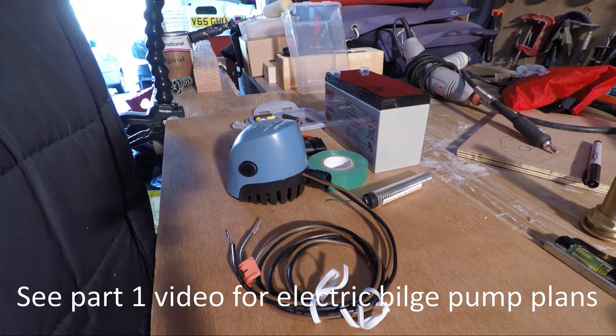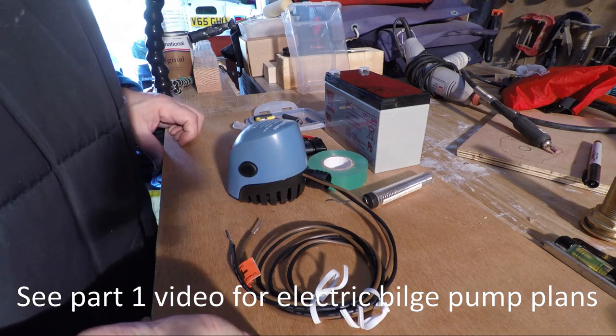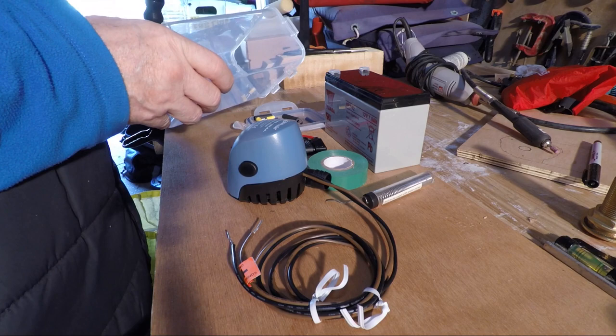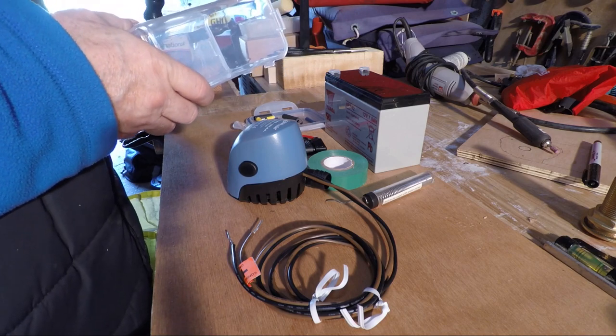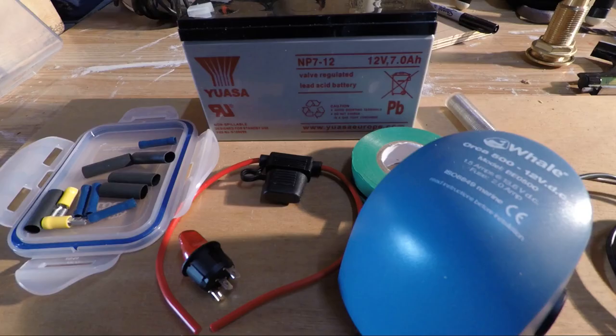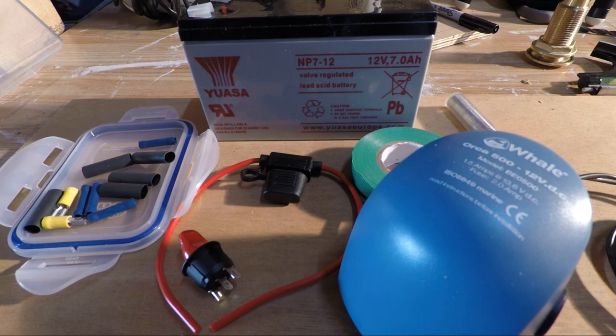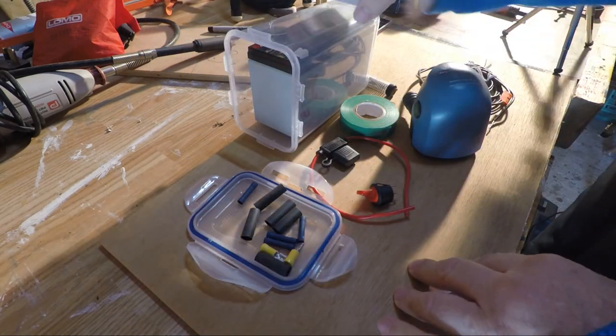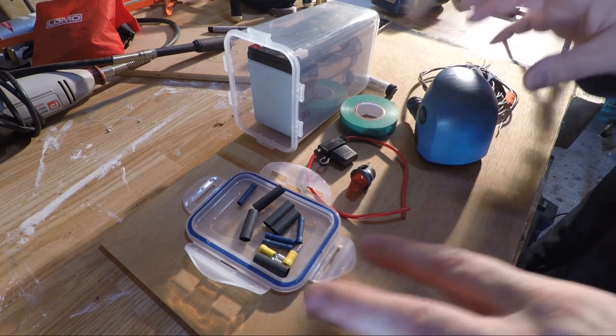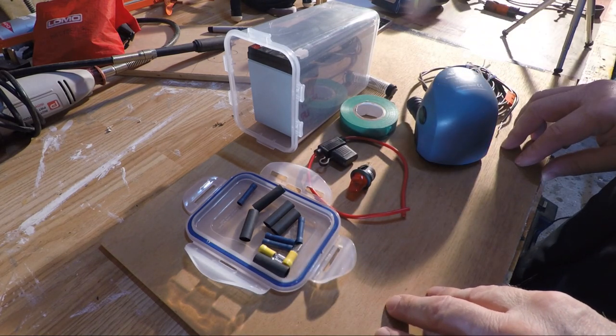Now if you remember what I'm looking at here is putting a bilge pump using a portable battery into a box like this so that I can move it around. So it's a Whale Orca 500 bilge pump, it's a 12 volt sealed lead acid battery which will go inside this container here, and then it will have also in there a fuse, a switch at the end, and it will be wired up so that I can then move it around different parts of the boat.